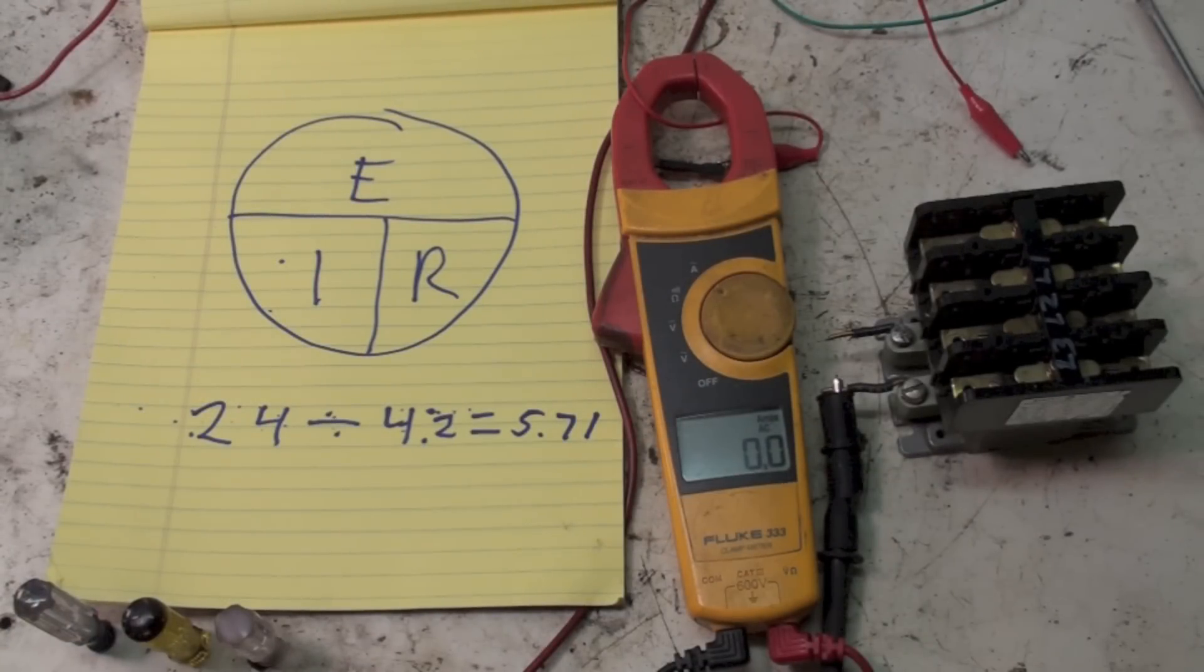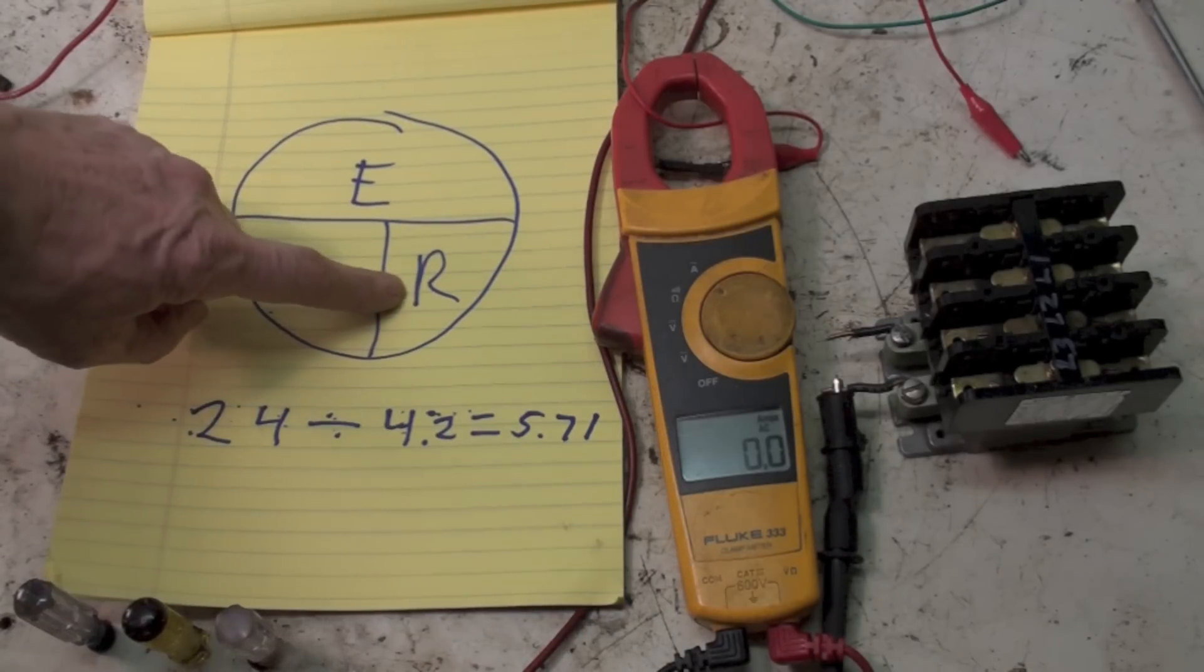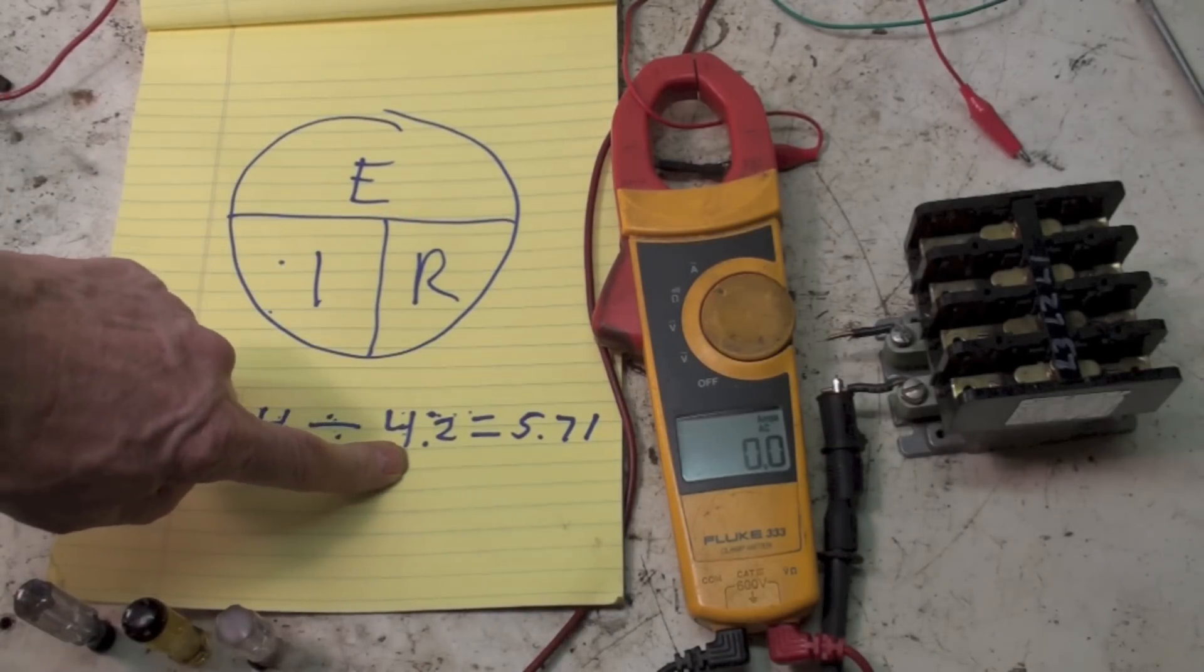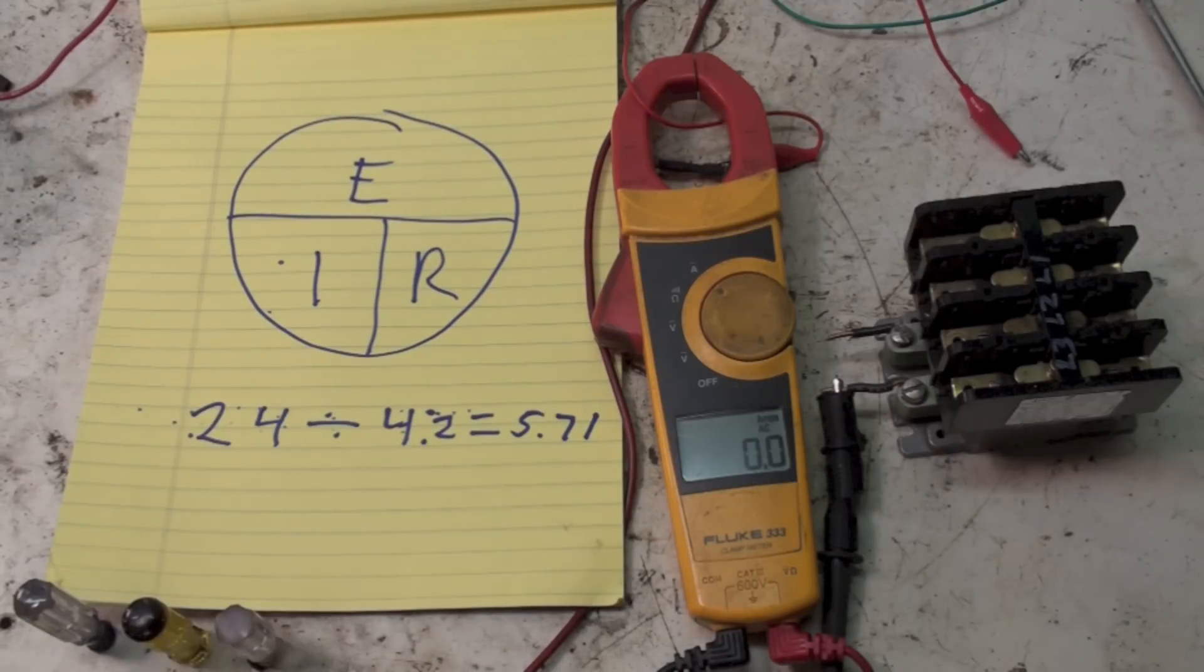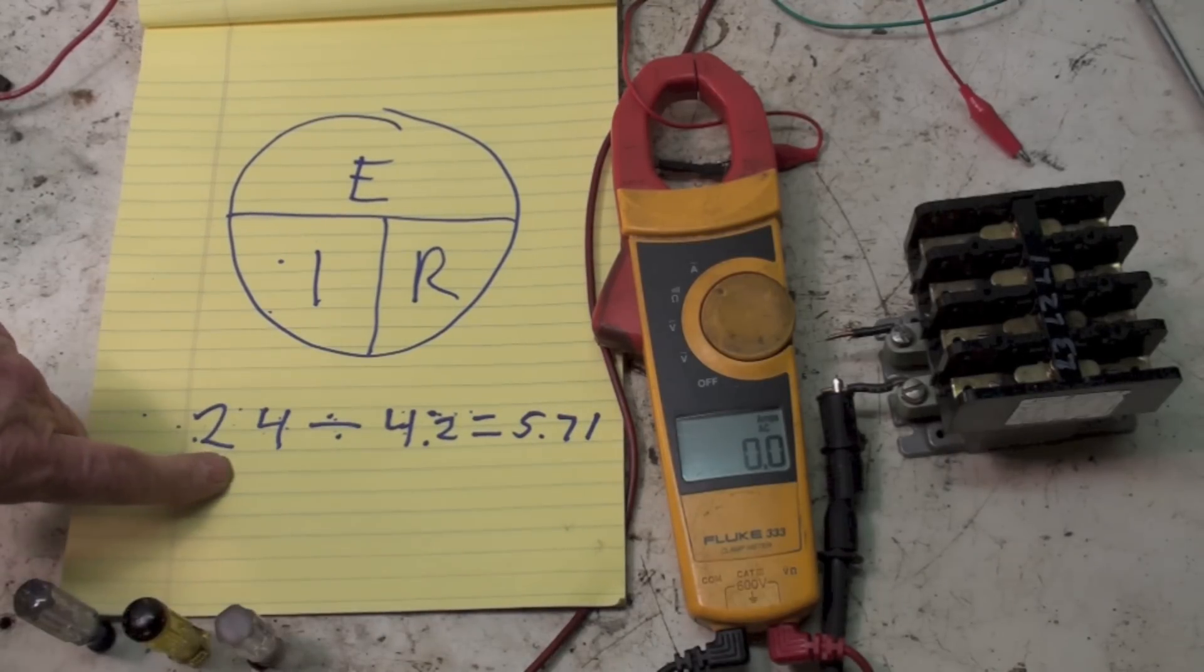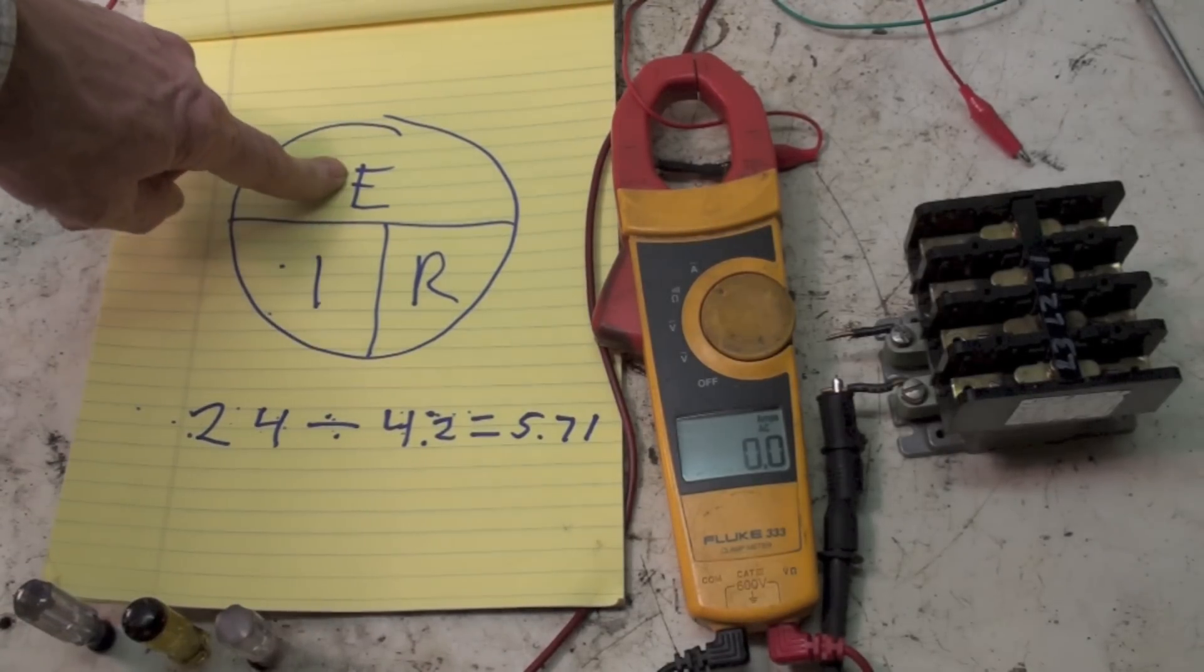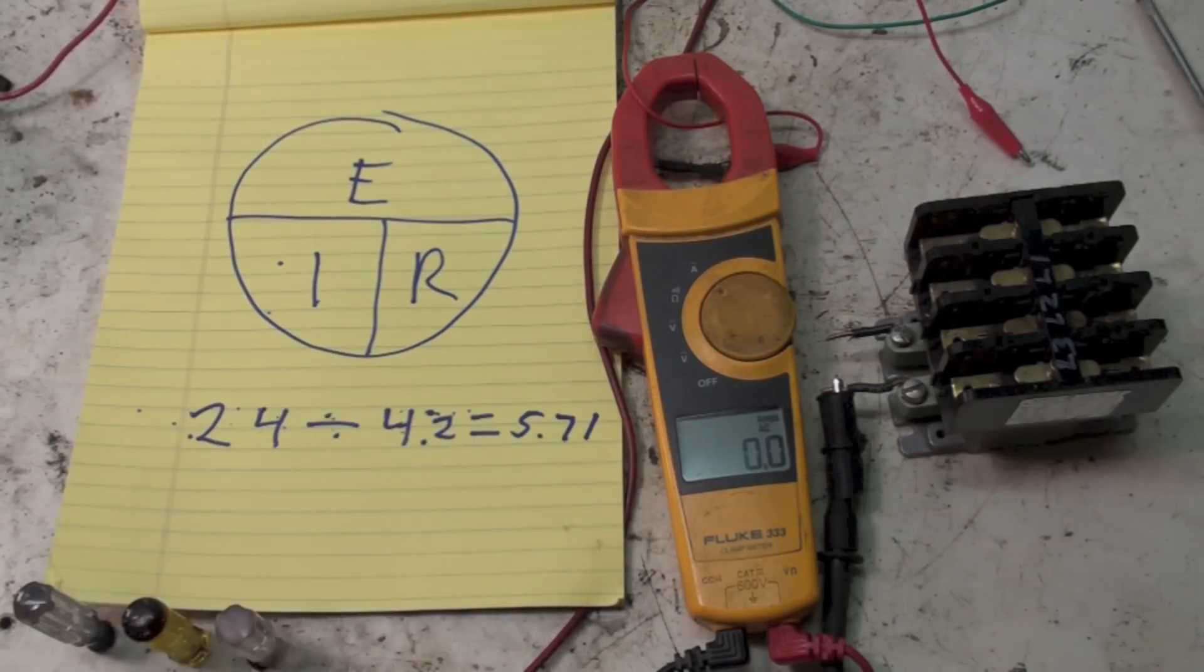If we look at this Ohm's law thing, we would divide the resistance here, or 4.2, into 24 - that's the voltage - and you would end up with 5.71. That's through Ohm's law. Now I've got the thing all set up.